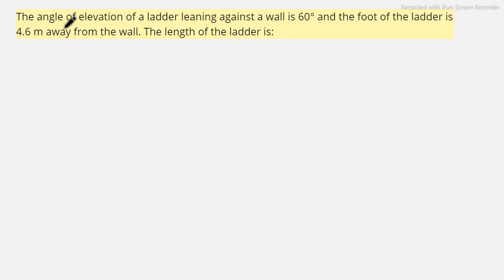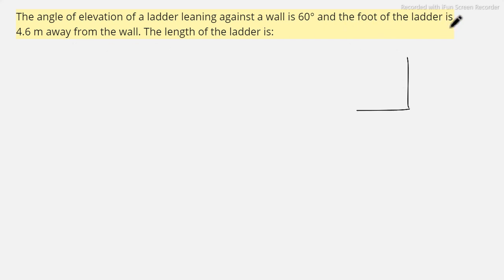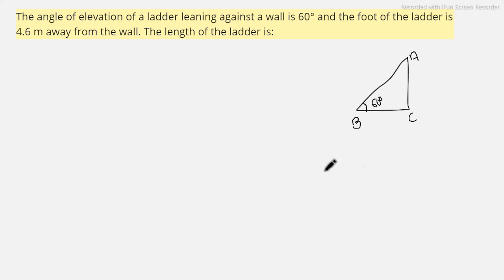The next question is: the angle of elevation of a ladder leaning against the wall is 60 degrees and the foot of the ladder is 4.6 meters away from the wall. Find the length of the ladder. Drawing the diagram — this is the wall as the vertical, the base is the ground, and the foot of the ladder is 4.6 meters away. Label the figure A, B, C with the angle of elevation as 60 degrees. We need to find AC, the length of the ladder.